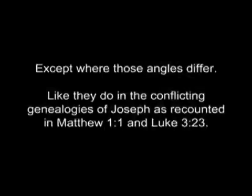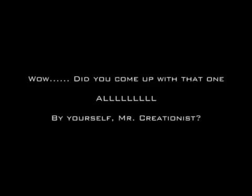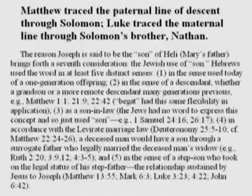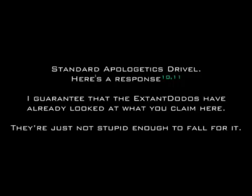Now let me give you a little suggestion. When God reveals a truth in His Word, He reveals it many, many times from different angles in different ways to confirm the truth of it. Except those angles differ — like they do in the conflicting genealogies of Joseph, as recounted in Matthew chapter 1 verse 1 and Luke chapter 3 verse 23. More stink. Did you come up with that one all by yourself, Mr. Creationist? You just don't have the correct information. Standard apologetics drivel. Here's a response, and I guarantee that the Extant Dodos have already looked at what you claim here — they're just not stupid enough to fall for it.